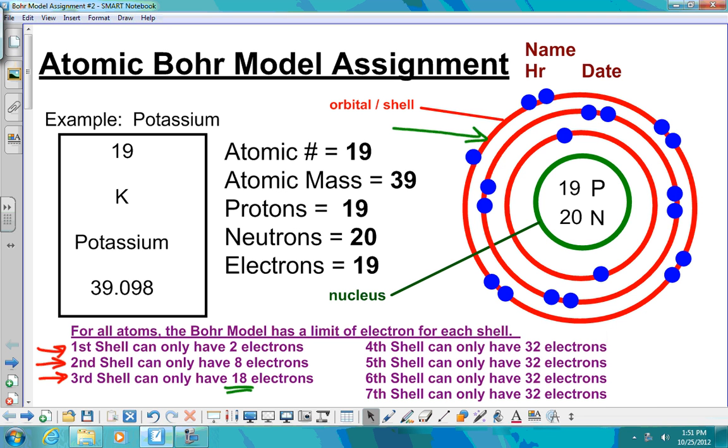So this week you had homework, the atomic Bohr model assignment. You had seven elements that you had to create a Bohr model for. So we're going to go over these, but real quickly I just wanted to review your rules.